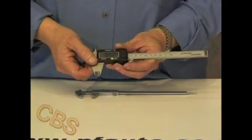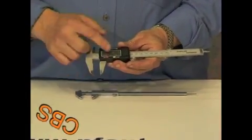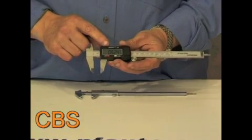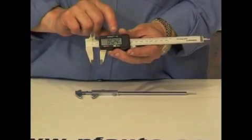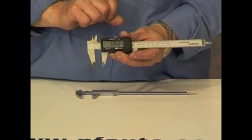And this is its modern equivalent, the digital caliper. This has an easy to read display that you can change from imperial to metric at the press of a button.